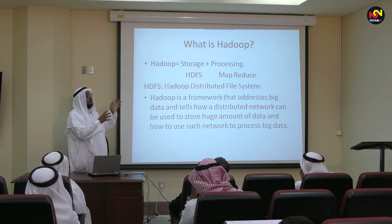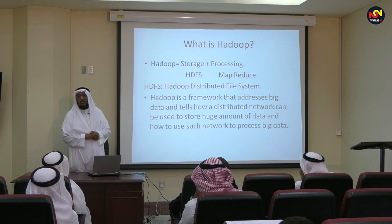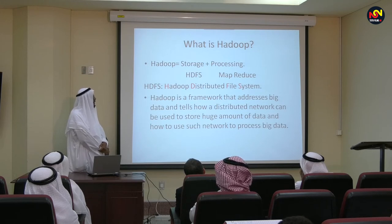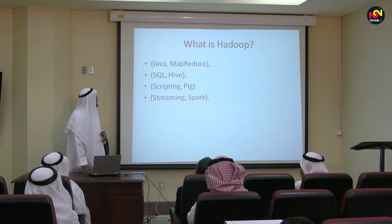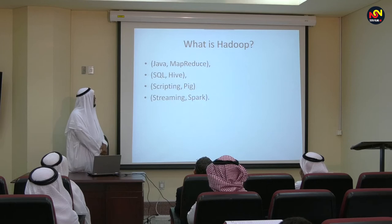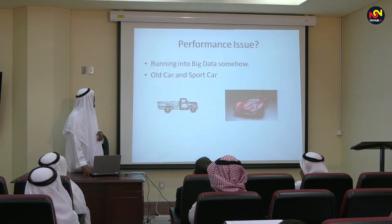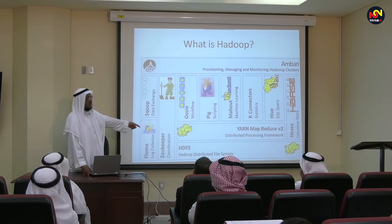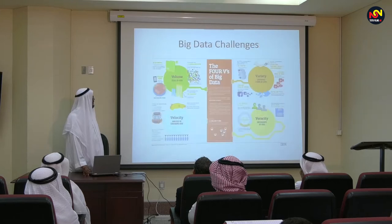Hadoop basically consists of a storage part and a processing part. The storage part is called the Hadoop Distributed File System (HDFS), and the processing part is called MapReduce. Hadoop is a framework that addresses the big data issue — it tells you how to process data in a distributed network, how to store this data, and how to get better use of it. Hadoop uses different technologies. We will explain just the core part: HDFS and MapReduce — written here as MapReduce 2. I will tell you why it is called MapReduce 2.